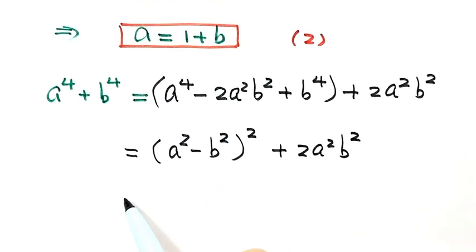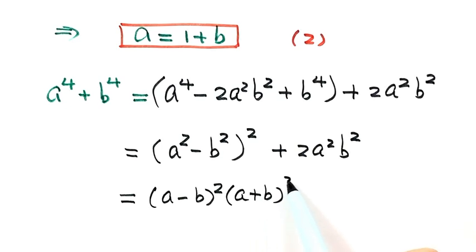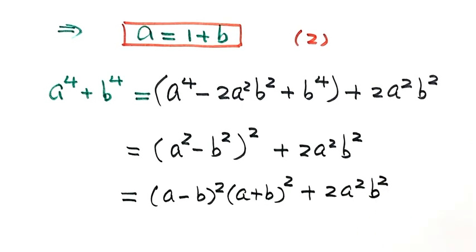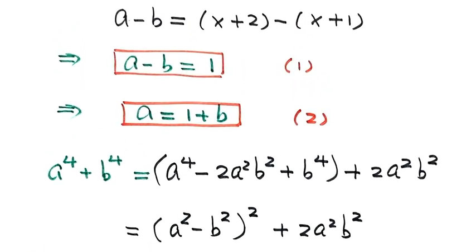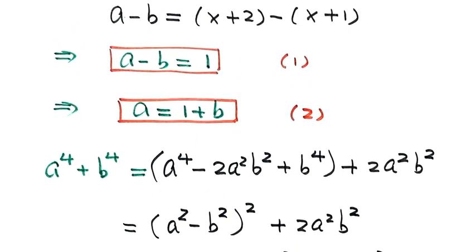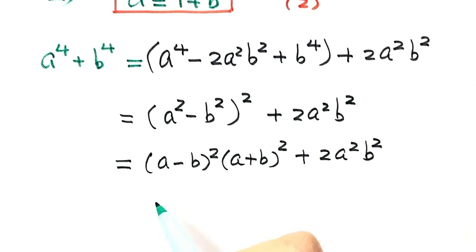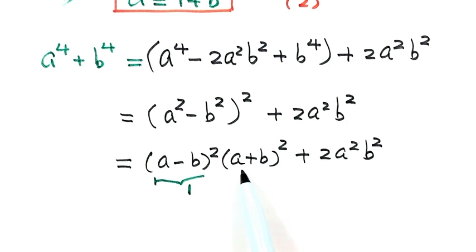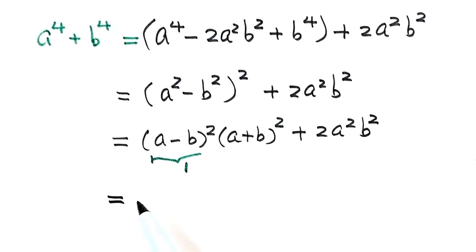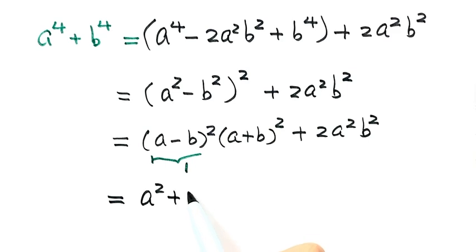We can factor the inside: (a² - b²) = (a - b)(a + b), so we have [(a - b)(a + b)]² + 2a²b². Since a - b = 1 from Result 1, this part equals 1. So we have (a + b)² + 2a²b², and expanding (a + b)² gives a² + 2ab + b².